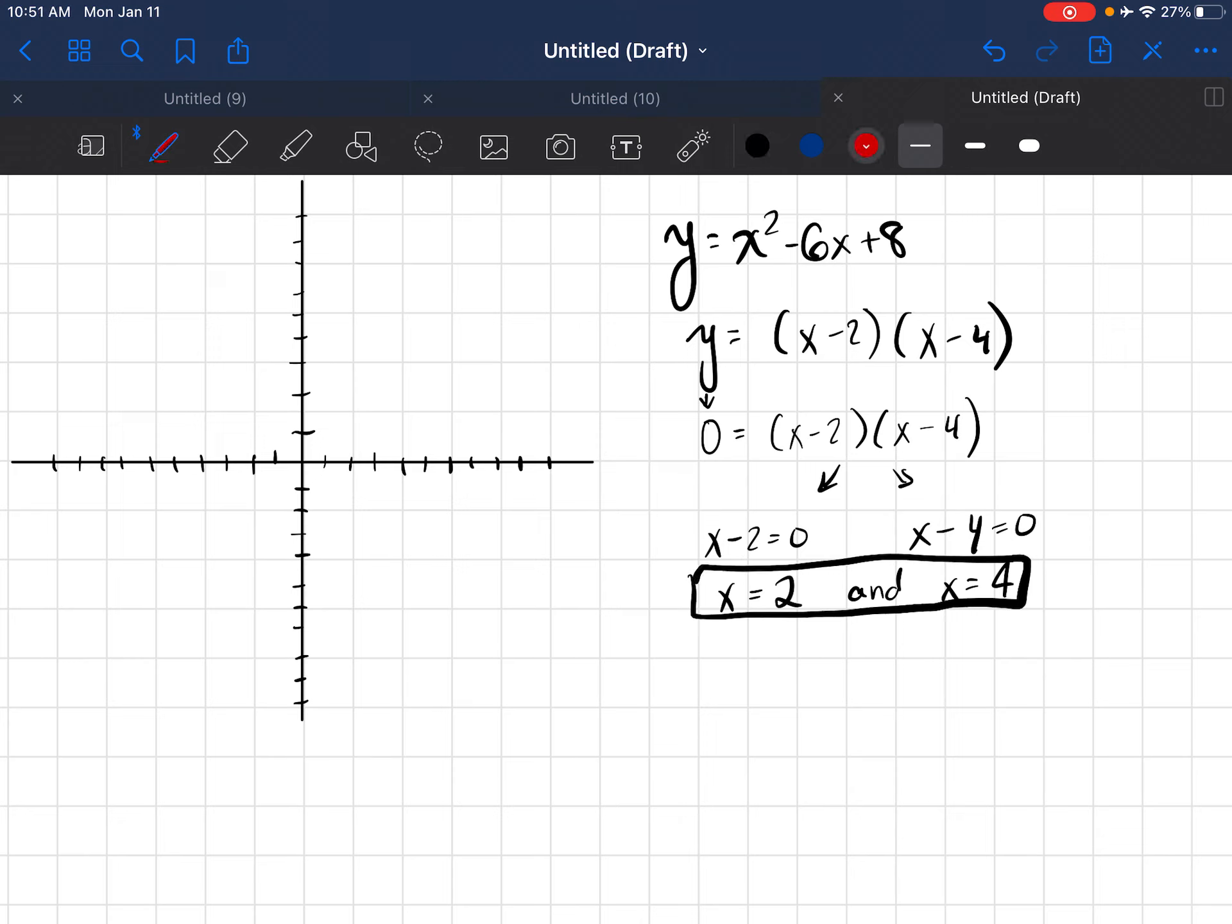And I am going to plot those on my coordinate plane. So x equals 2 is here and x equals 4 is here. So that's my first step: solving using the zero product property and graphing the x-intercepts.